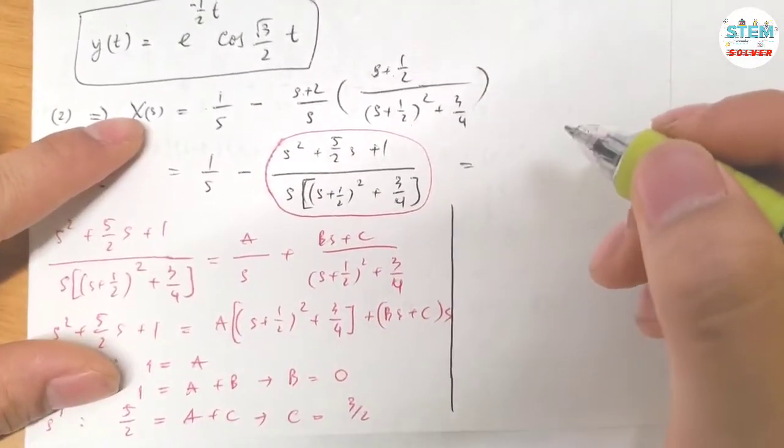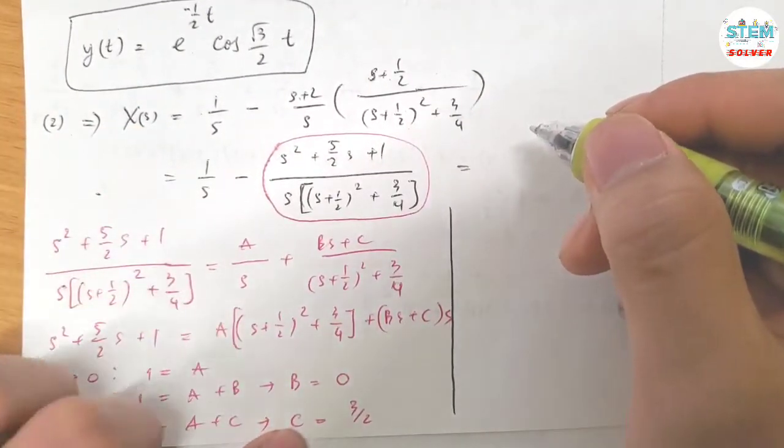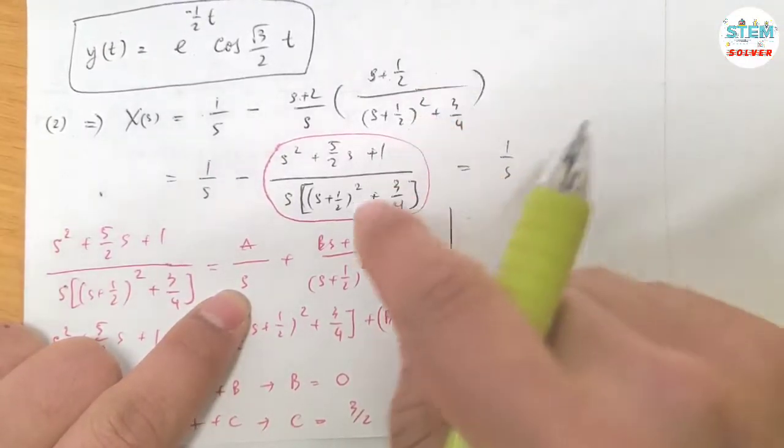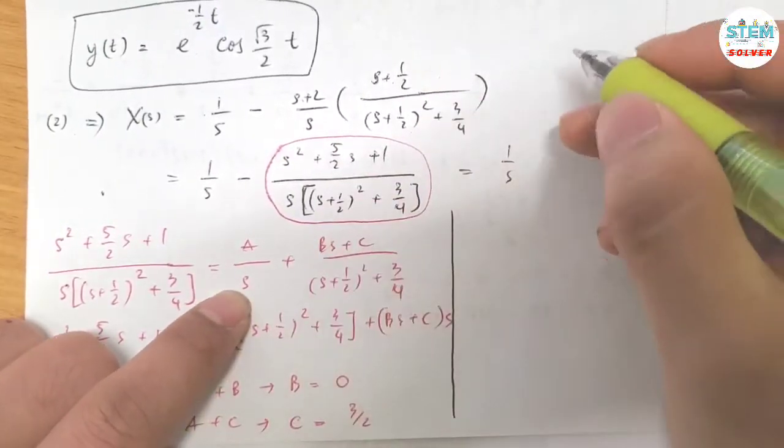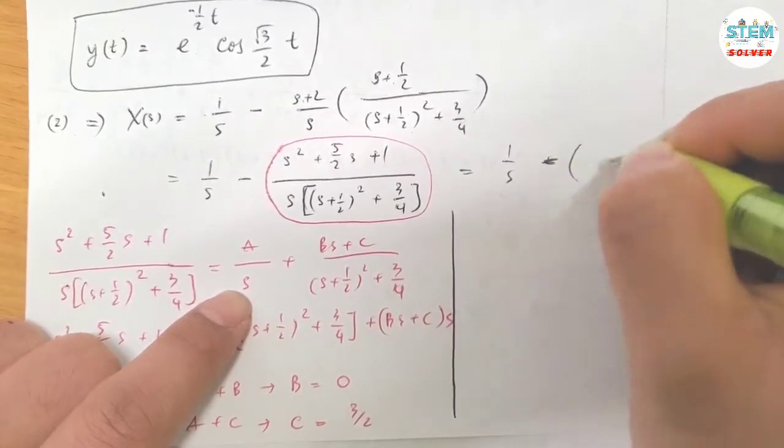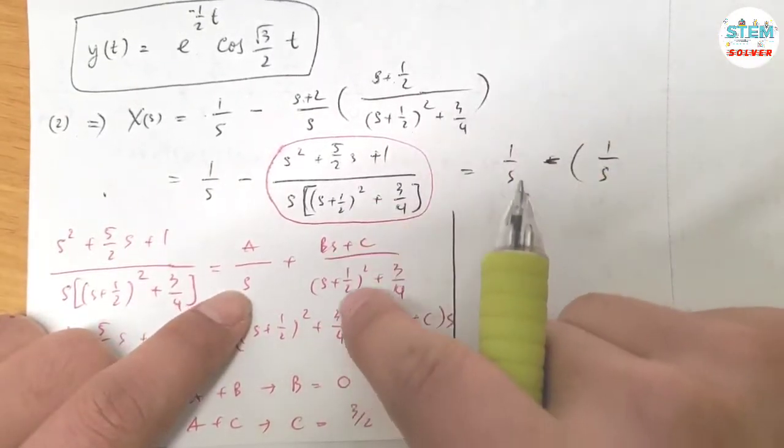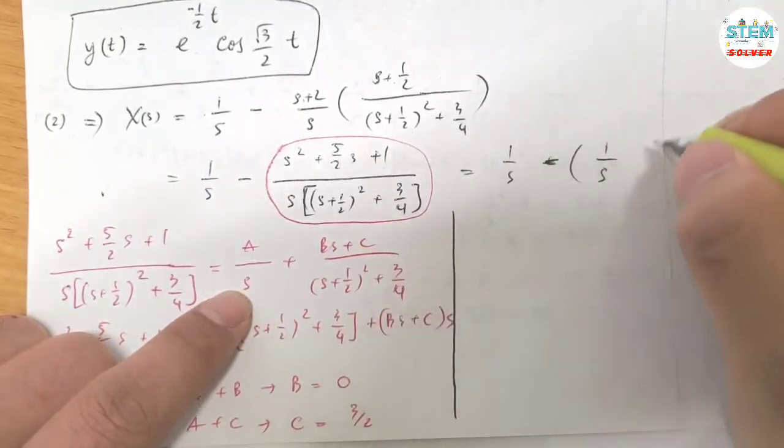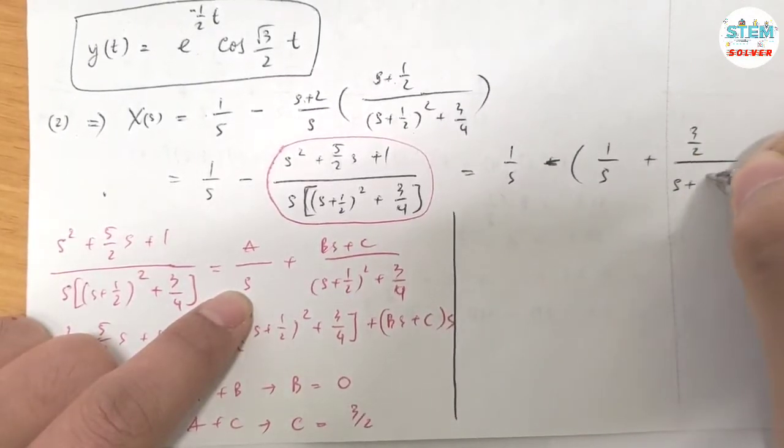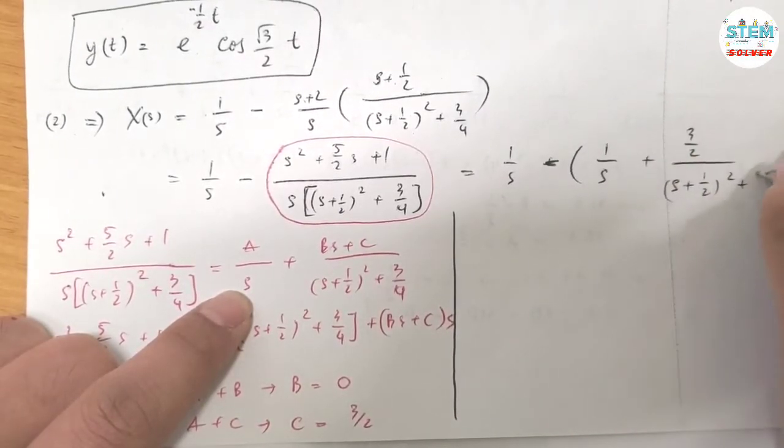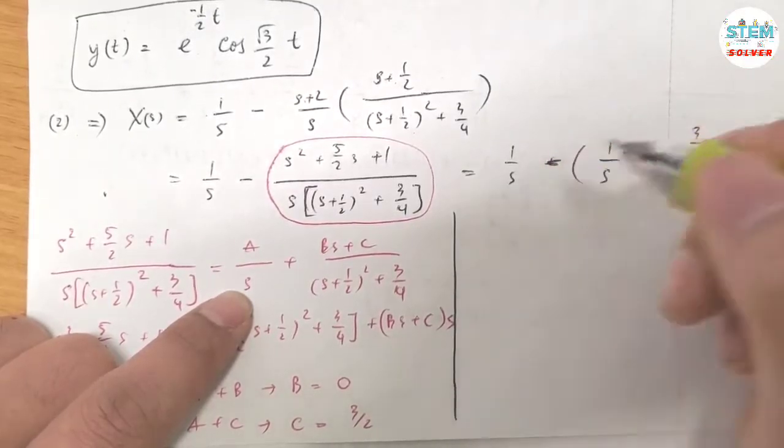So I have to figure out A, B, and C. Now plug these back in here. So I have A over S which is minus 1 over S. And B is 0 so I have 0. C is 3/2.